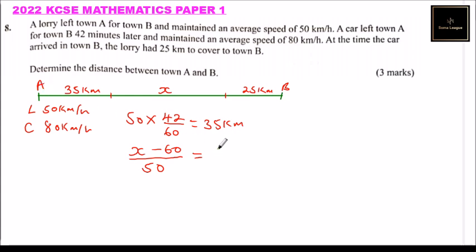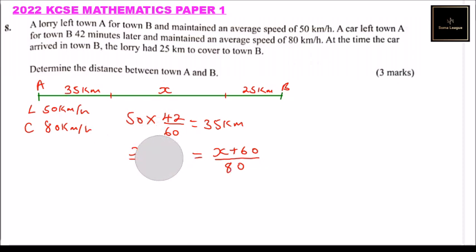And therefore, we say it is x plus 60, divided by the speed of the car which is 80. Now we need to correct the time taken by the lorry — it is x divided by 50. This is the same as the time taken by the car to cover a distance of 35 plus 25, which gives you 60 plus x. So if we equate that, then we'll be able to find x.